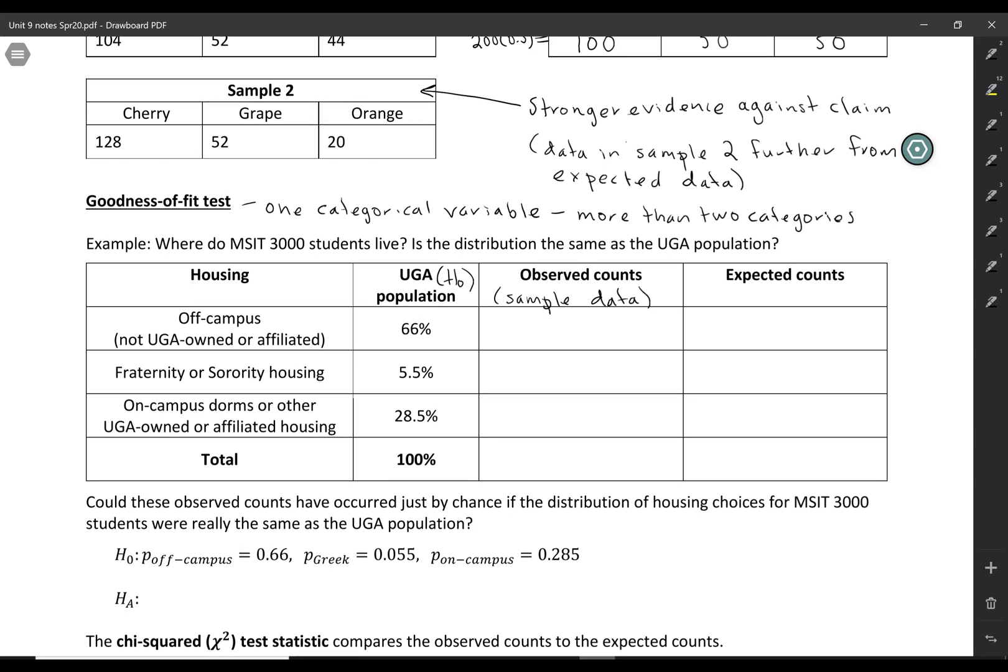So when I collected this data last semester, I got 56 people who lived off campus, 15 people who lived in fraternity or sorority housing, seven people who lived on campus or in some other UGA owned housing. So there were 78 people total.